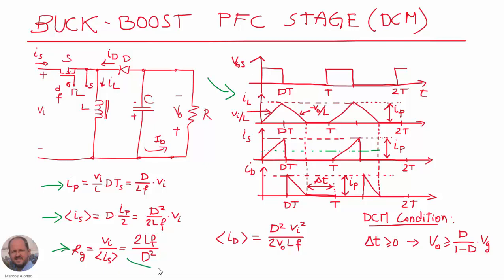From the average current through the switch and using also the input voltage, we can calculate the expression for the equivalent input resistance of our converter, which is vi divided by the average current through the switch. We obtain this expression that we have seen in previous slides for the value of the equivalent resistance. We also need the average current through the diode, which gives us this other expression here.